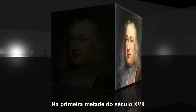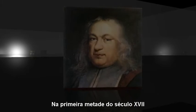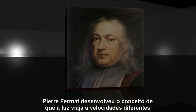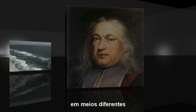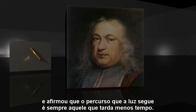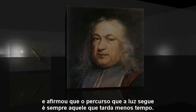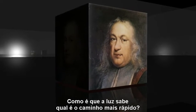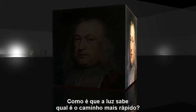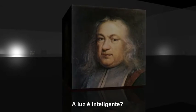Living in the first half of the 17th century, Pierre Fermat developed the concept that light travels at different speeds in different media, and maintained that the path the light takes is always the one that takes the least time. His detractors at the time gleefully pointed out the obvious objection: how does the light know which path will be the quickest? Smart light?